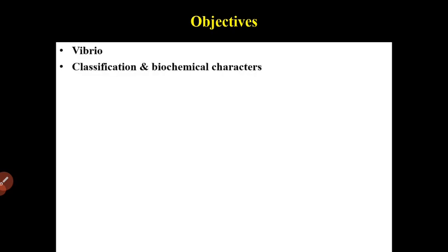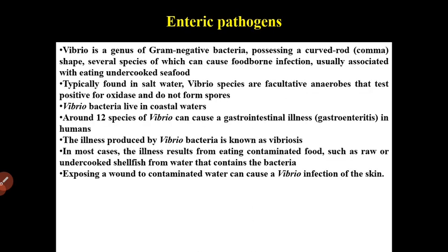Our objectives include the classification, biochemical characteristics, antigenic structure, and viability characteristics of Vibrio. Vibrio is a genus of gram-negative bacteria possessing a curved rod, comma shape. Several species can cause foodborne infection, usually associated with eating undercooked seafood. Typically found in saltwater, Vibrio species are facultative anaerobes that test positive for oxidase and do not form spores.